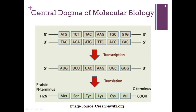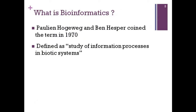Where do we get data in biology and what is the need for a subject called bioinformatics? We all know about the central dogma of molecular biology, which states that the DNA sequence is first transcribed to the RNA sequence — that is the messenger RNA — which is then translated to the protein, that is the amino acid sequence. So, there is data at every stage of the central dogma. Keeping this in mind, the first definition for bioinformatics was given by Pauline Ogbeck and Ben Hesker in 1970.